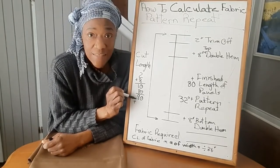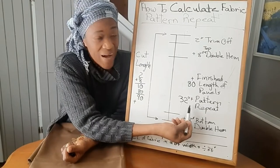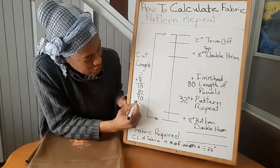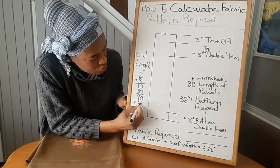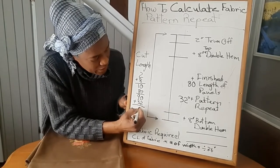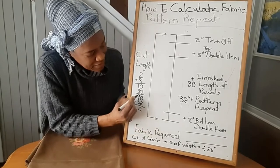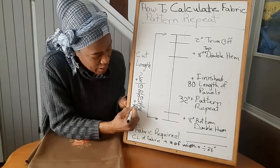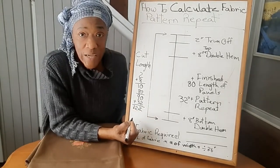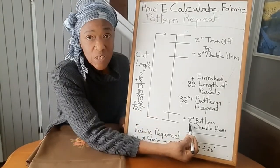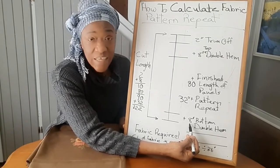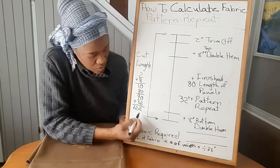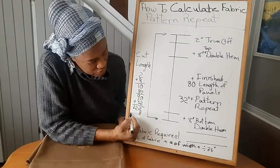Now the next thing to add will be our pattern repeat, and our pattern repeat is 32 inches. So let's add 32 to the 90, so we have 90 plus 32 equals 122. So we have 122 inches, and then we need to add eight inches for the bottom double hem, so we add eight inches here. So that's 130 inches.